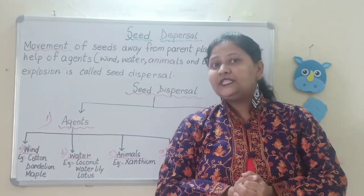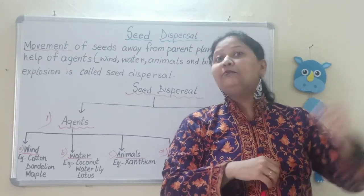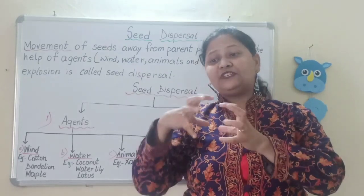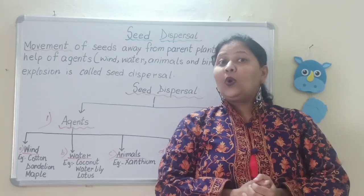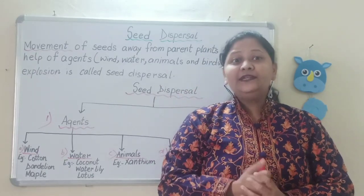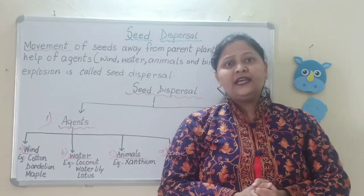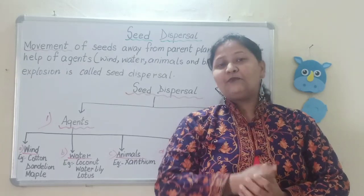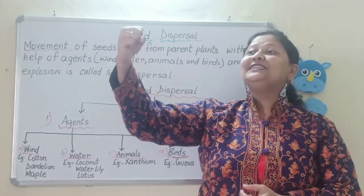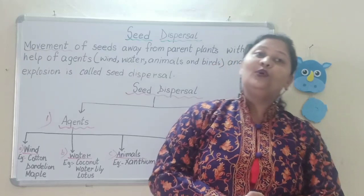Likewise, when we are talking about seeds — if the parent plant drops all its seeds right there, they will be overcrowded. And what is required for a seed to grow into a plant? Soil, water, proper air, and sunlight. These all things are required for proper growth. But plants are not motile — they cannot move from one place to another. So there must be some process by which the seed will travel from one place to another, where it will get sufficient space to grow, sunlight, air, and fertile soil.